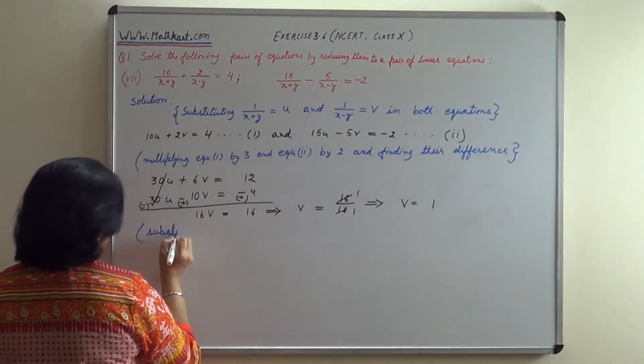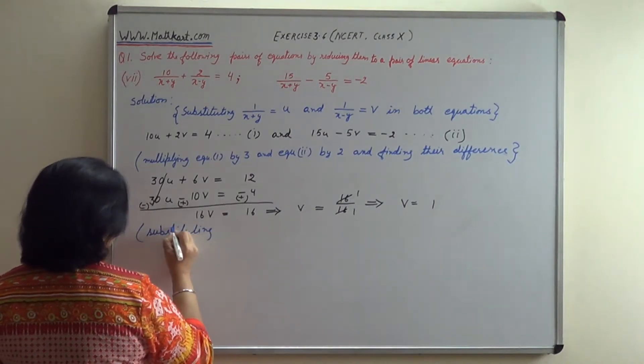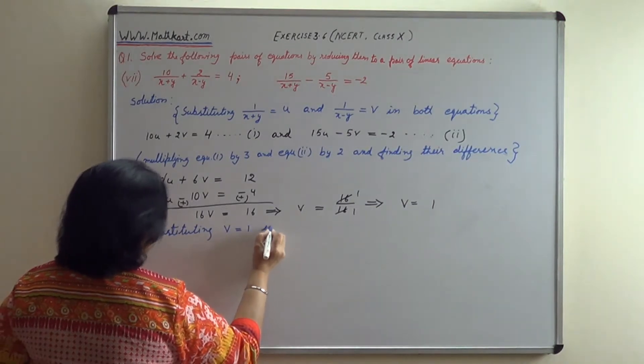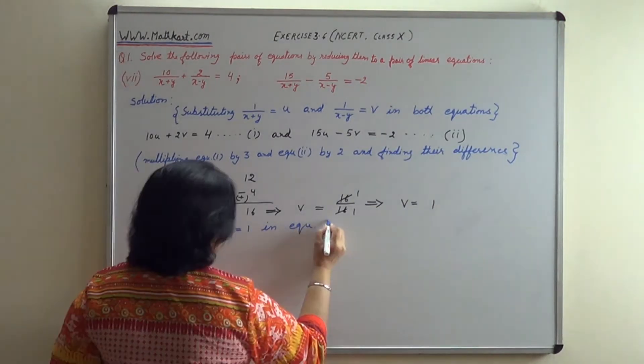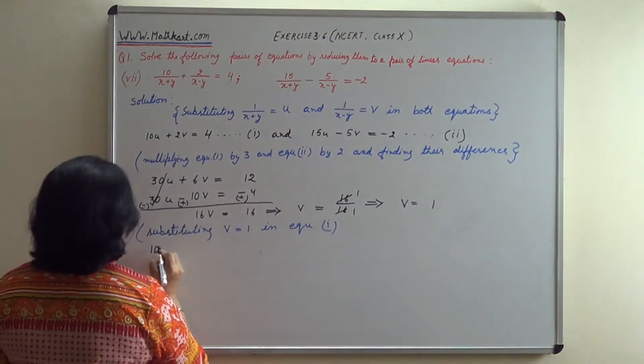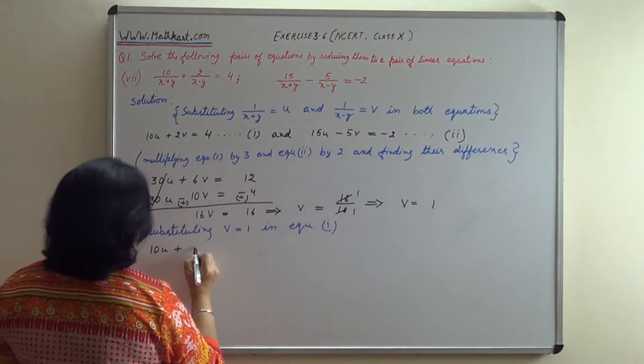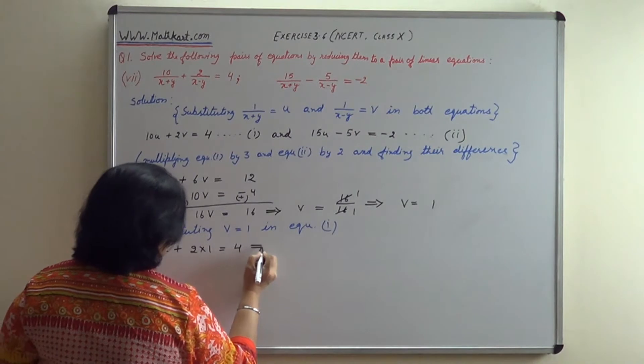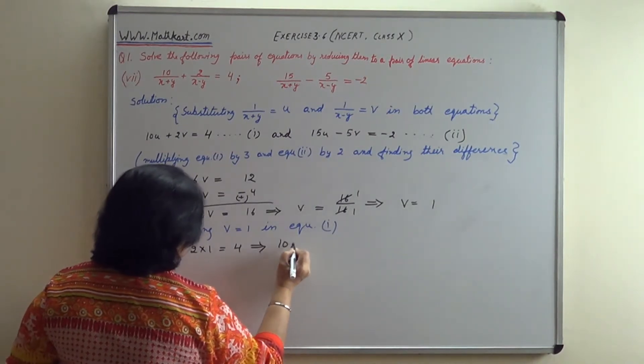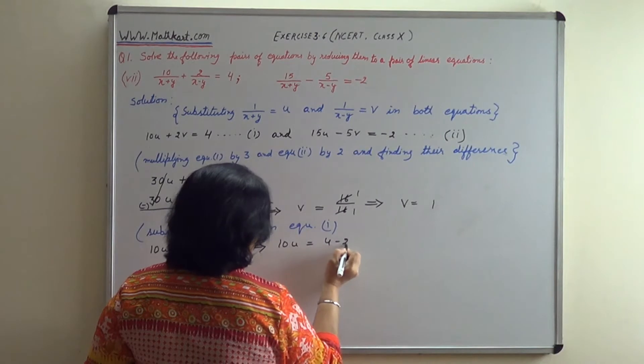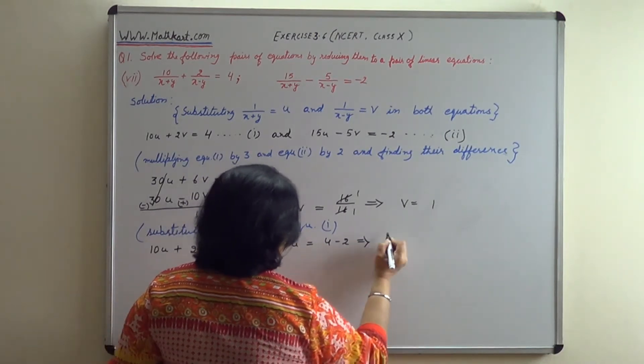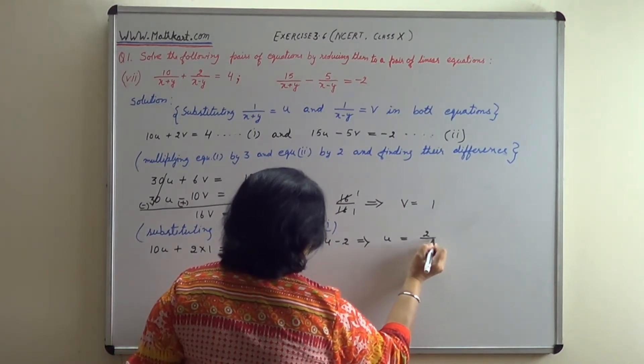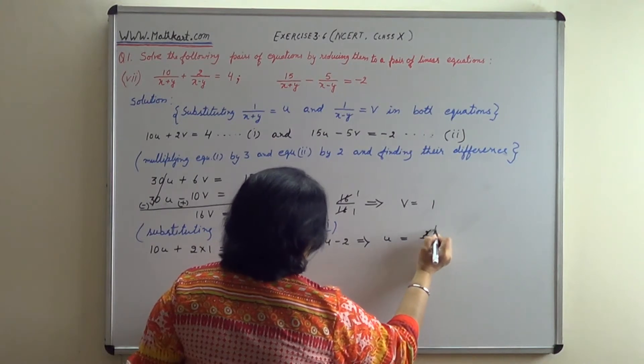Substituting v equals 1 in equation 1: 10u plus 2 into 1 equals 4. This implies that 10u equals 4 minus 2, so u equals 2 upon 10, which cancels to give u equals 1 upon 5.